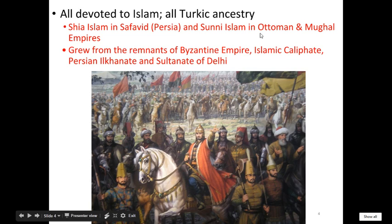All of these are going to be Islamic empires — they're all going to follow one form of Islam or another. Islam has two major divisions, two sects: one is the Shia, and one is the Sunni. This goes back to after Muhammad's death, and the question of who should be the caliph — the successor to Muhammad. That's where the arguments between the Sunni and the Shia originated, and those two branches are going to become the main religions of these three empires.